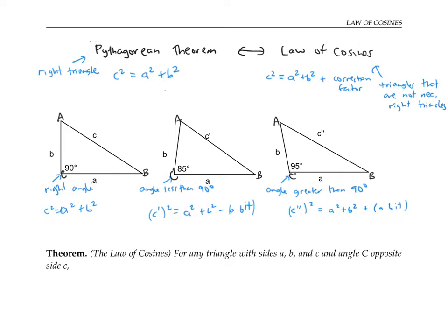The law of cosines says exactly what this correction factor is. It says that for any triangle with sides a, b, and c and angle capital C opposite to side c, c squared is equal to a squared plus b squared minus 2ab cosine of angle C.